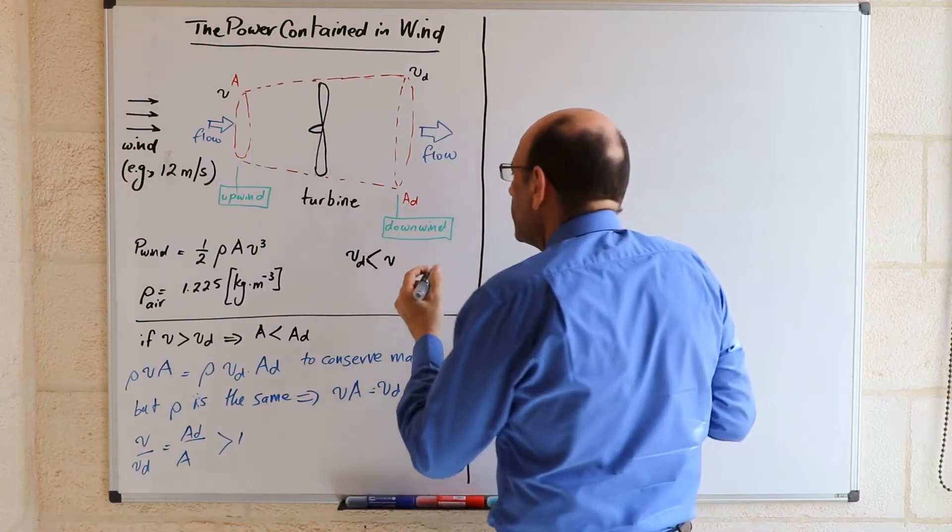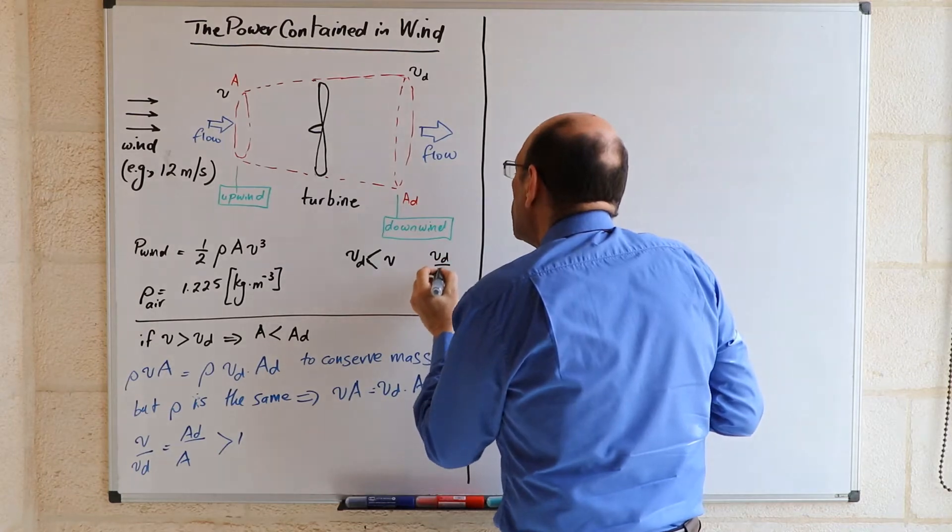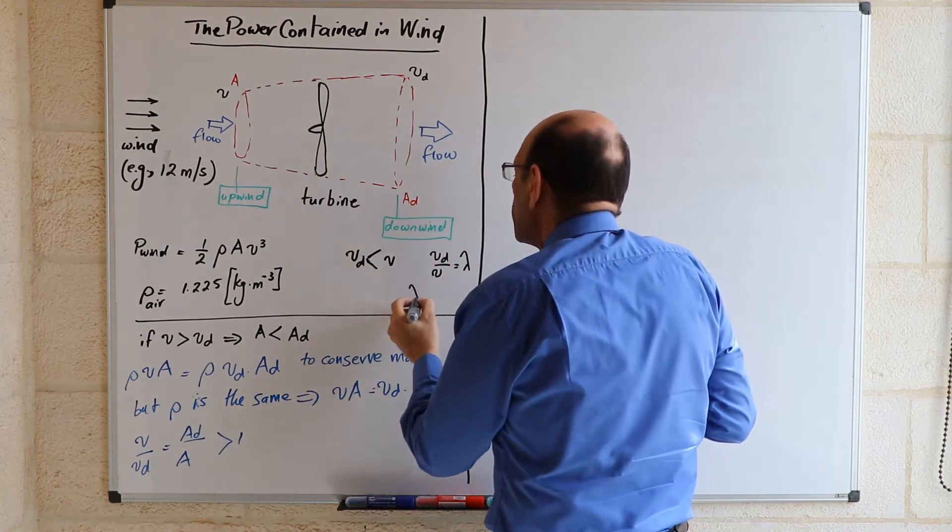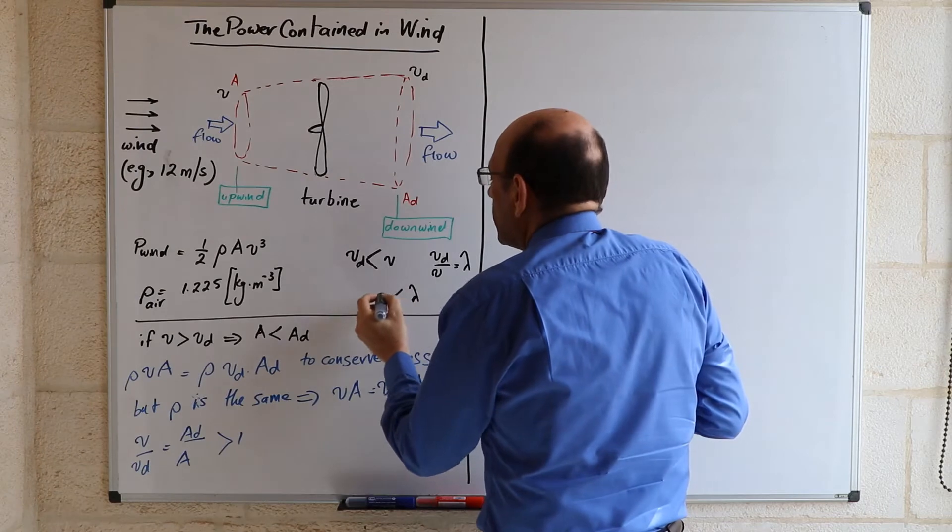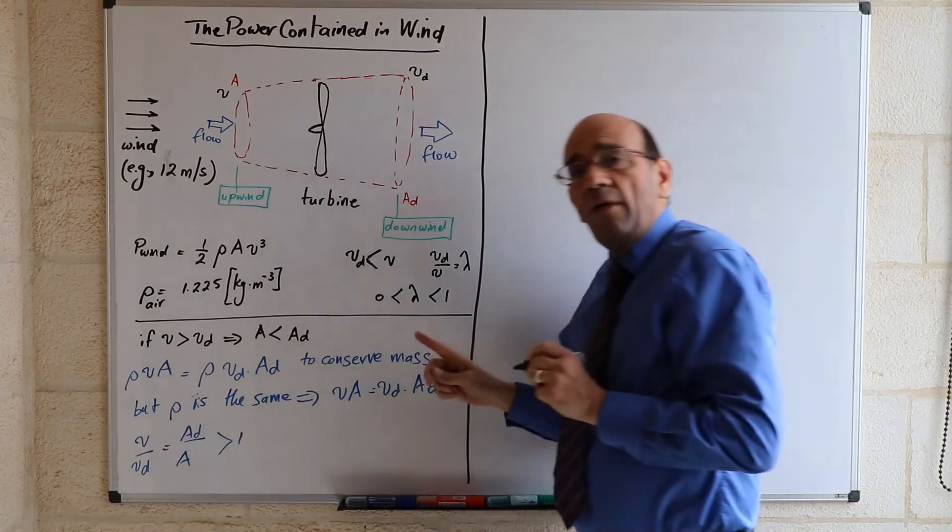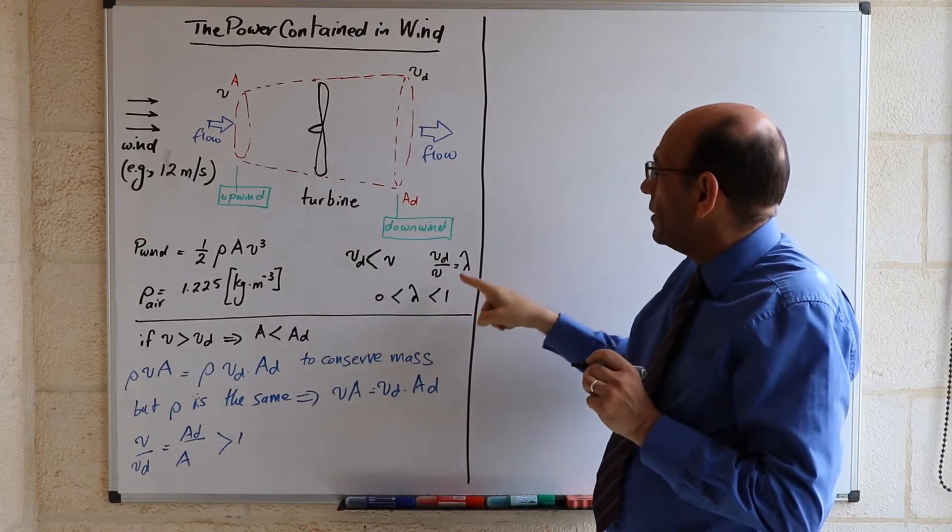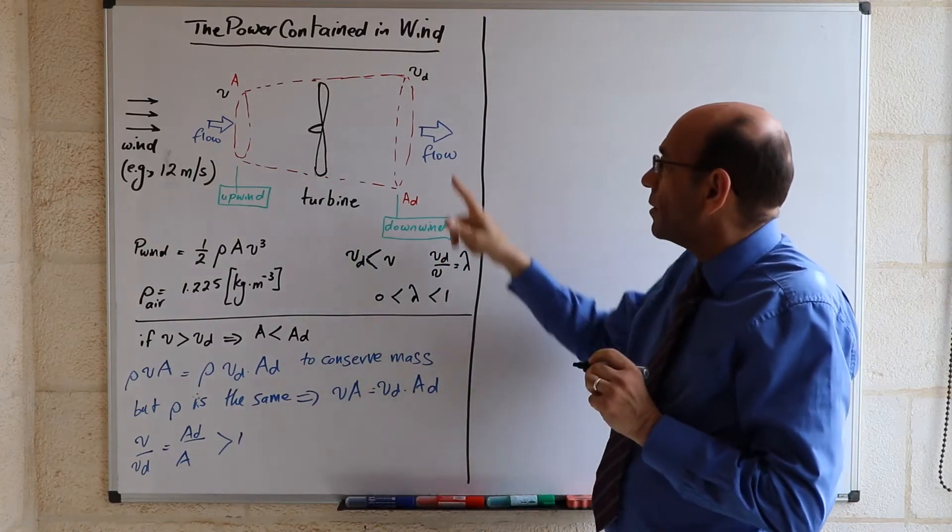And in fact, the ratio of Vd over V we will denote as lambda, and lambda is a number that ranges from 0 to 1. So because Vd is smaller than V, lambda will have to be smaller than 1.